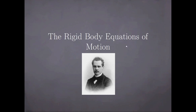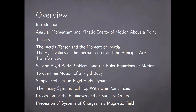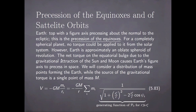Welcome to the rigid body equations of motion. Today we are going to discuss the precession of the equinoxes and of satellite orbits. We are going to model the Earth as a top of a figure axis precessing about the normal to the ecliptic — that is, the normal to the plane containing the orbit of the Earth around the Sun. And it is this precession motion that is referred to as the precession of the equinoxes.